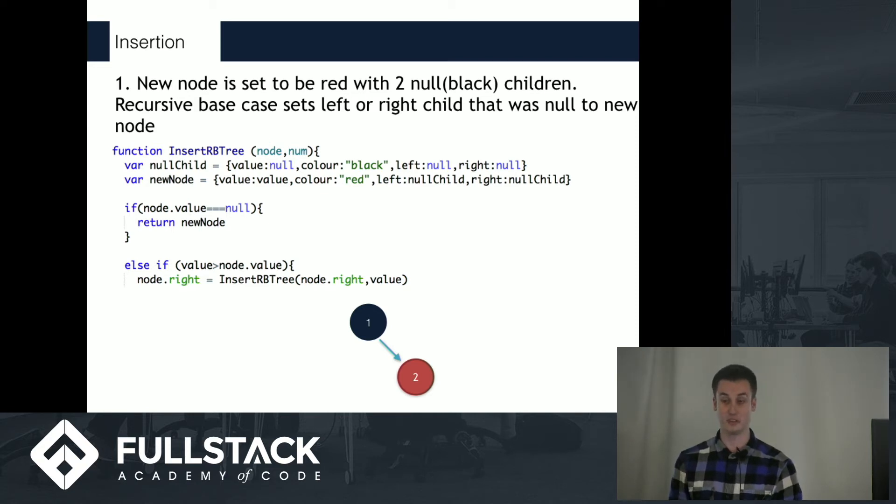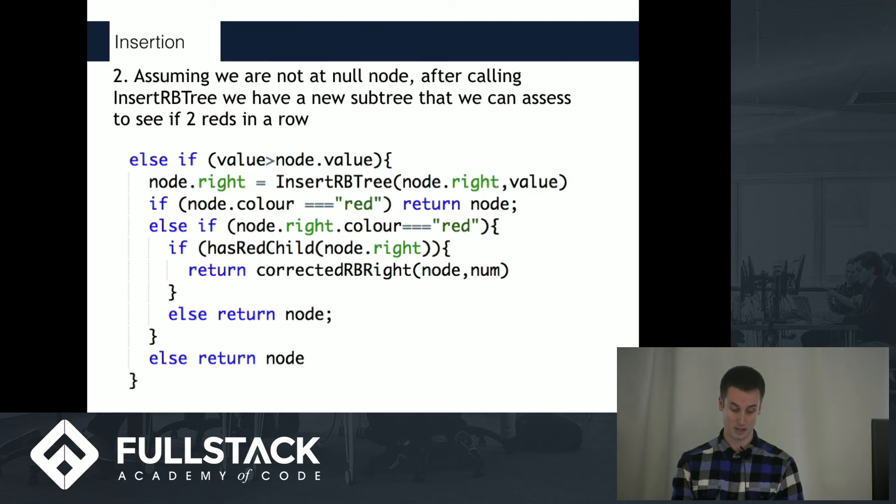In this case, however, the new node that we create is always red, as you see on the new node line, and it has two null black children. Once we've inserted that node, we have to actually check to make sure that this is a valid red-black tree, so that there are no two red nodes in a row.